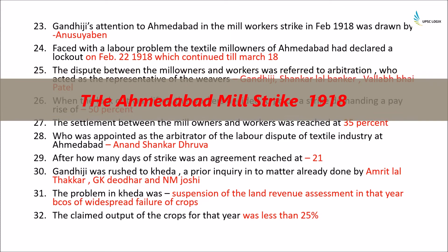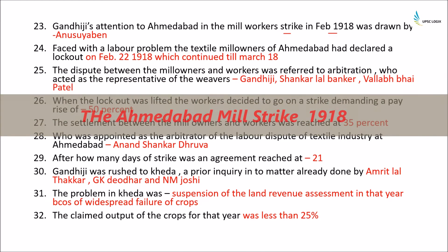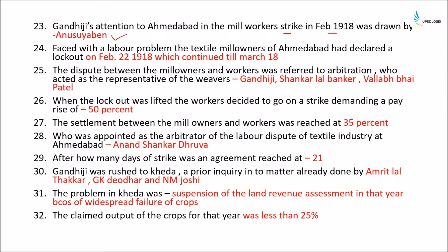After Champaran, Gandhiji's attention was drawn to the Ahmedabad mill workers' strike in February 1918 by Anusuya Ben. The strike lasted from February 22nd to March 18th, 1918. The matter was referred to arbitration under Anand Shankar Dhruv. Gandhiji, Shankar Lal Banker, and Vallabhbhai Patel acted on behalf of the workers, who had been demanding a 50% pay rise, which was settled at 35%. This strike lasted around 21 days, after which Gandhiji was rushed to Khera.